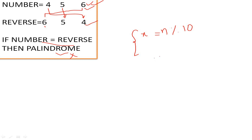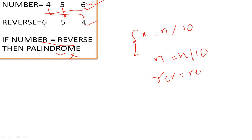n का खुद से ही division करो 10 से, मतलब n is equal to n divided by 10. और reverse निकालने के लिए: reverse will be equal to reverse into 10 plus x.